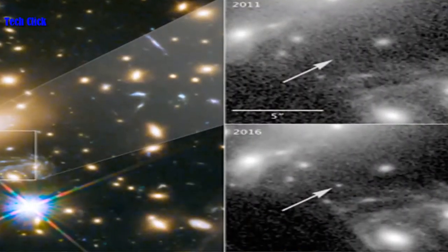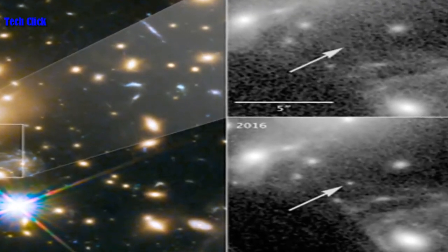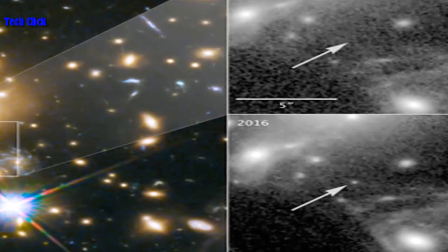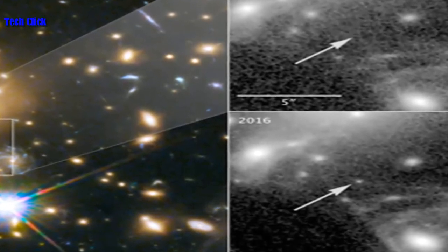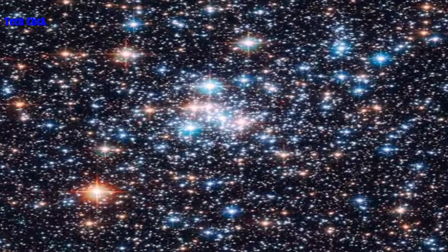Another famous kind of supernova, called Type Ia, involves a stellar corpse known as a white dwarf siphoning material from a companion star until the dwarf passes a mass threshold, triggering a runaway nuclear reaction.